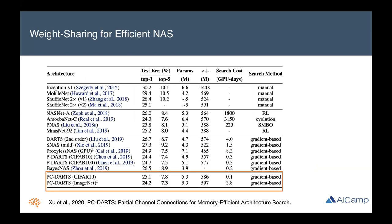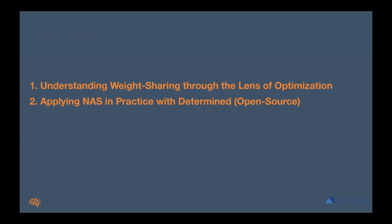You might assume that using weight sharing sacrifices some accuracy in the architectures you're able to discover. But with additional improvements in recent research, weight sharing methods have been able to match the performance of first-generation methods that required thousands of GPU days. That said, there are still outstanding questions about weight sharing and skepticism about whether this is the right approach for NAS. In this talk, I'll present some of my work on getting a better understanding of weight sharing through the lens of optimization, and in the second part I'll talk about how you can start applying NAS in practice with Determined's open source deep learning platform.